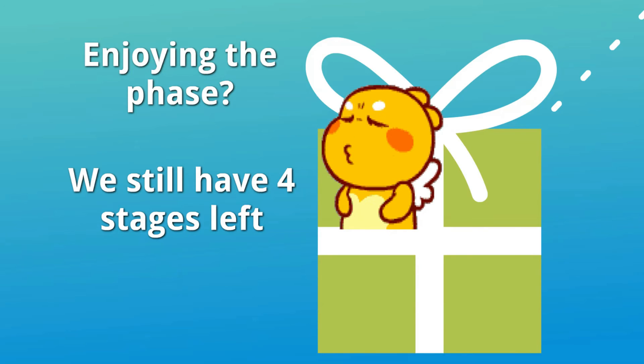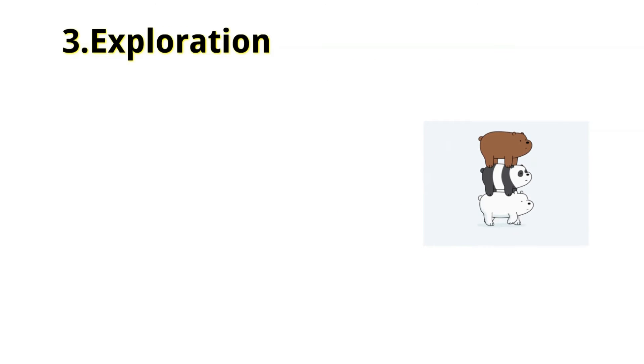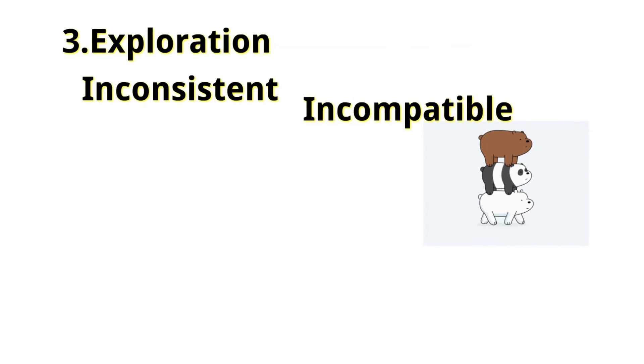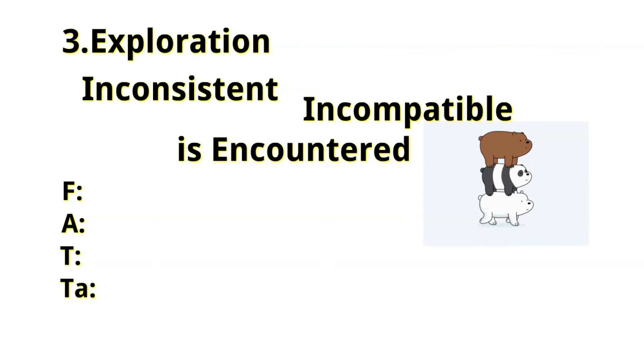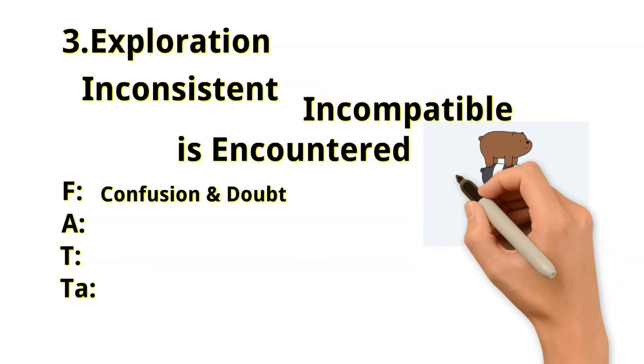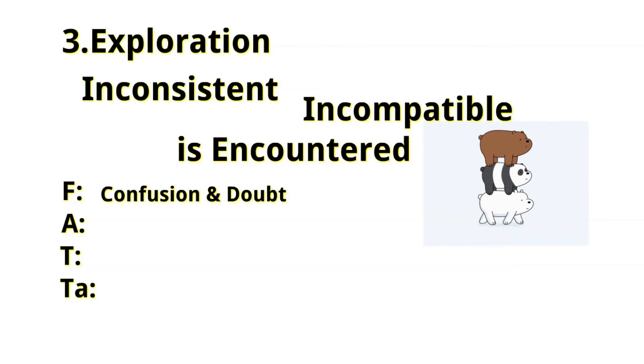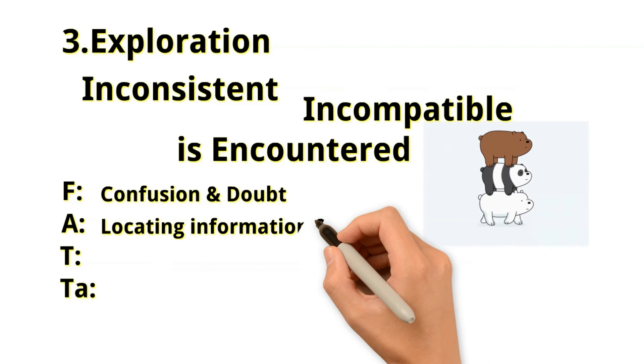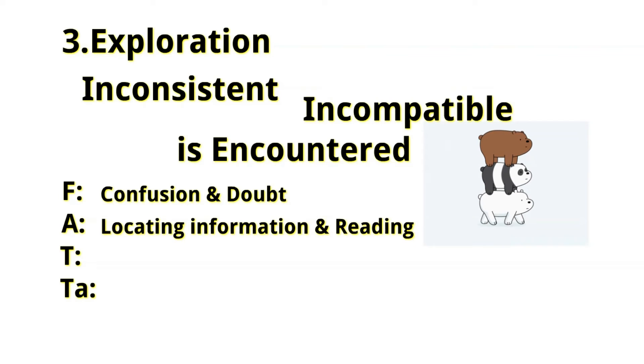The next stage that we will be talking about is called Exploration. Exploration is when inconsistent and incompatible information is encountered. Again, we'll be talking about the FAT. The feelings involved in your exploration would include confusion and doubt. Also remember that over time, your confusion and doubt increases because remember we are exploring information. Actions involved in your exploration stage would involve locating information about the topic and reading to become informed.